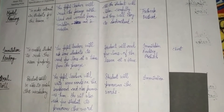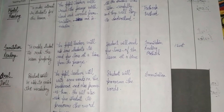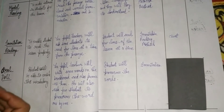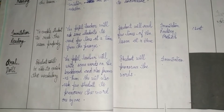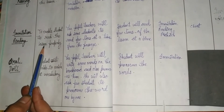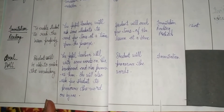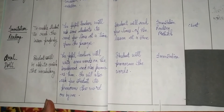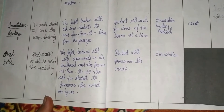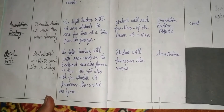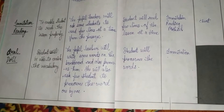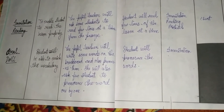The teacher must pronounce very clearly so that the students can understand. At that time, all students in the class will listen carefully and try to understand. After the chapter is complete, imitation reading takes place — the teacher will ask some students to read a few lines at a time from the passage. So students will read a few lines of the lesson at a time.